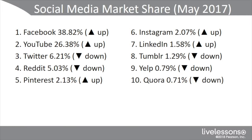This is as of May 2017. Next to each media site, we see if their numbers are up or down. Number one and number two are Facebook and YouTube, which as of May were on the uptick. Twitter is on the downtick, which is a noticeable phenomenon. There's also Reddit, Pinterest, Instagram, LinkedIn, Tumblr, Yelp, and Quora — those are the top 10.